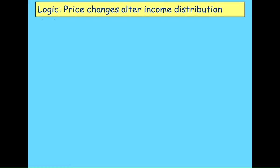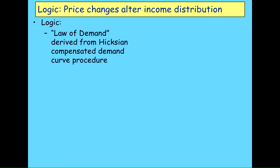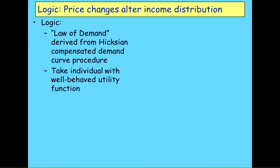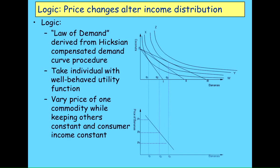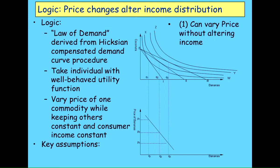The logic behind it is that changing prices affects income distribution. So let's go through what actually happens in deriving the Hicksian compensated argument. First of all, you take an individual with a well-behaved utility function, and they vary the price of one commodity while keeping the others constant and the consumer's income constant. You can derive, most of the time, a downward-sloping demand curve — though of course you've got Giffen goods and so on. A key assumption here is that you can vary the price without varying the consumer's income, which is fair enough in the case of an individual, and what it means is that the pivot point stays stationary.